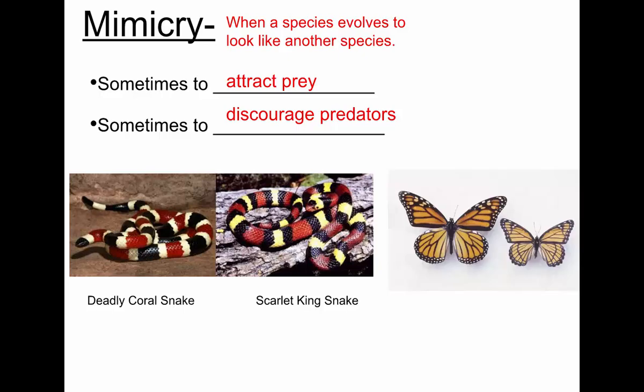This is a monarch butterfly — they are poisonous because they eat milkweed and incorporate toxins from the sap into their bodies. Most predators are not going to eat monarchs. This is not a monarch — this is a viceroy butterfly. It has evolved to look quite similar to the monarch, again to avoid predators.